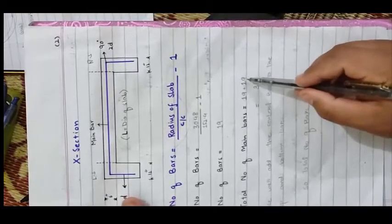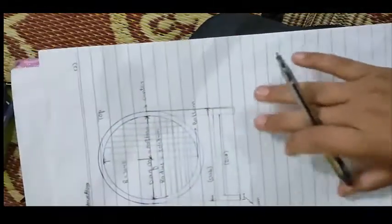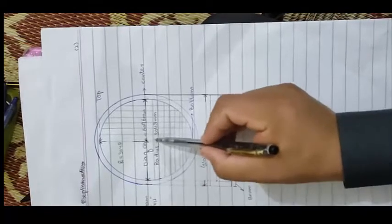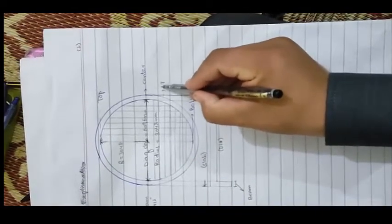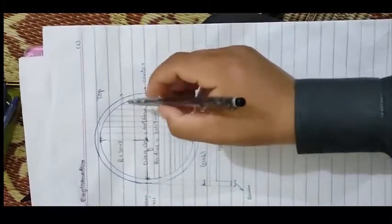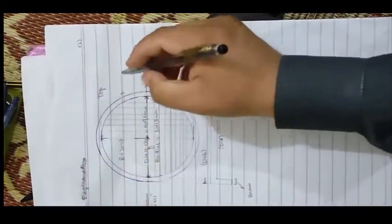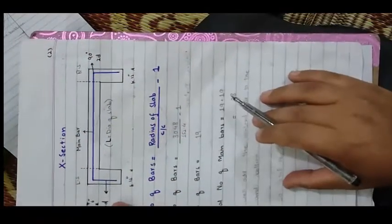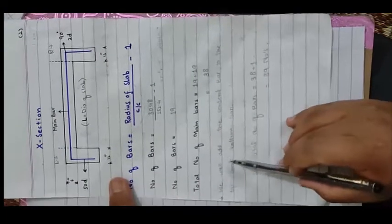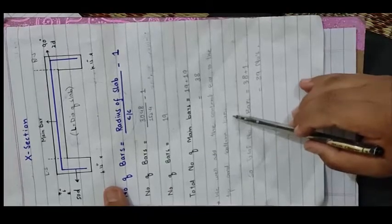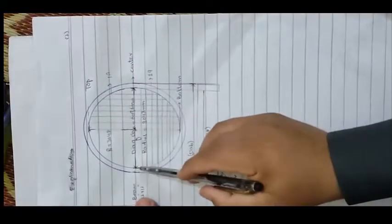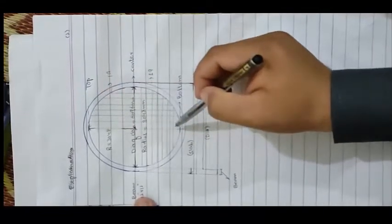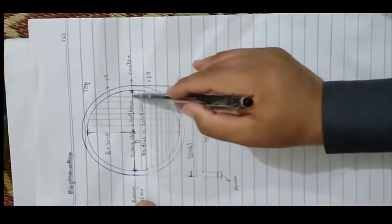We add 19 plus 19 because we have two sides. From one side to center we have 19 bars, and from center to the other side we also have 19 bars. Combining both gives us 38 bars for the overall slab. We then add the central bar, which was not counted in the top and bottom bars, so we add this central bar to the total.